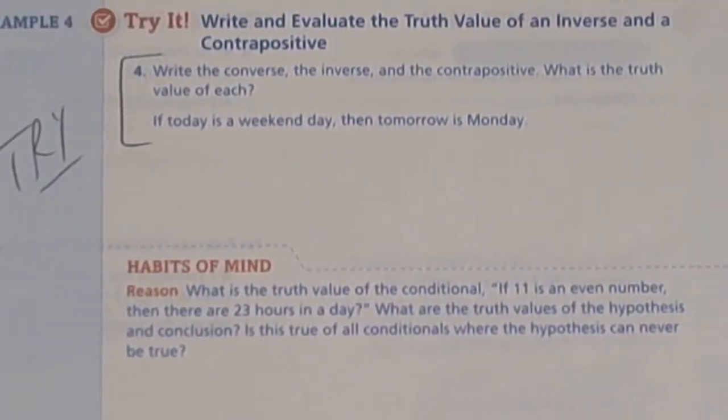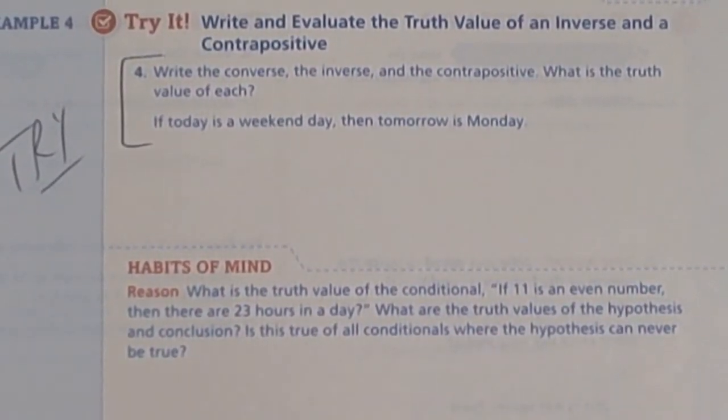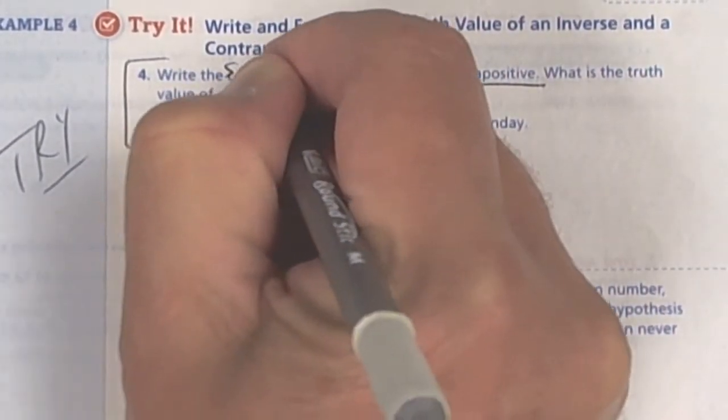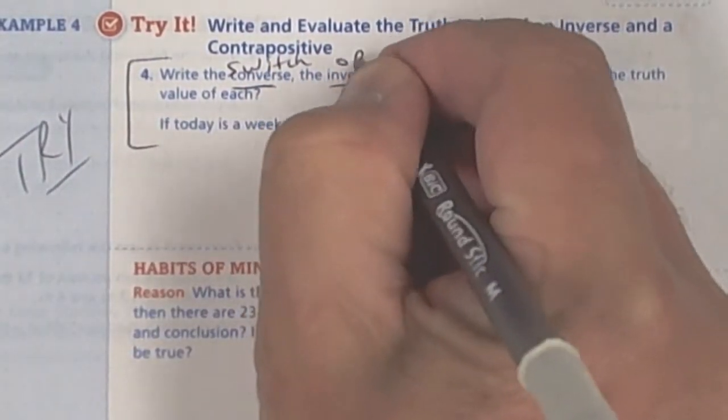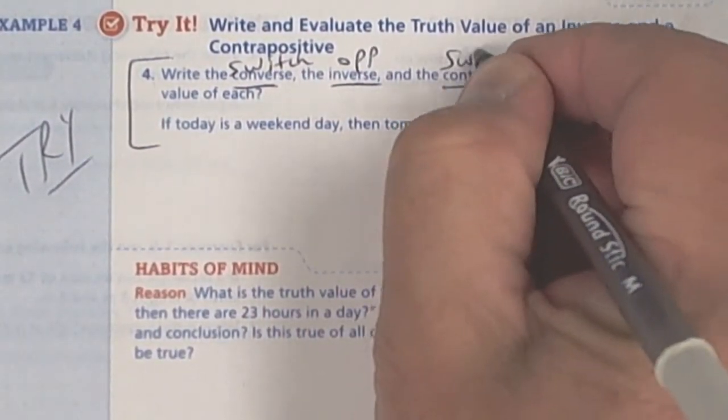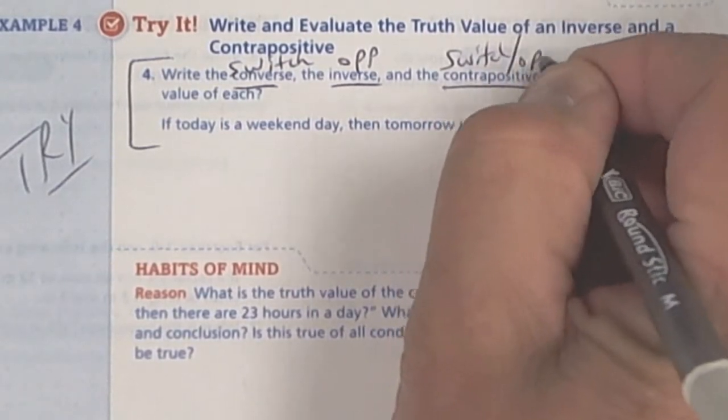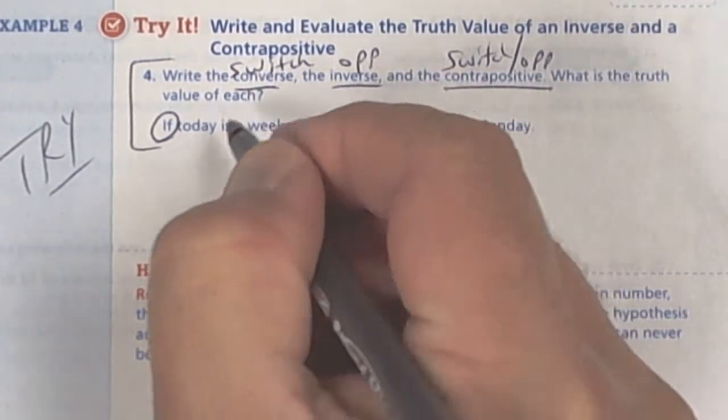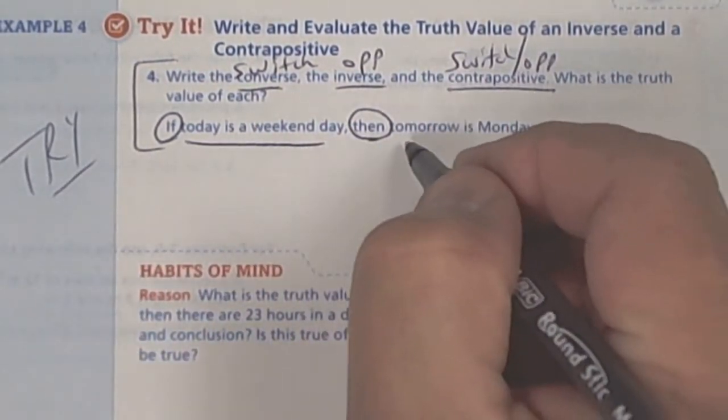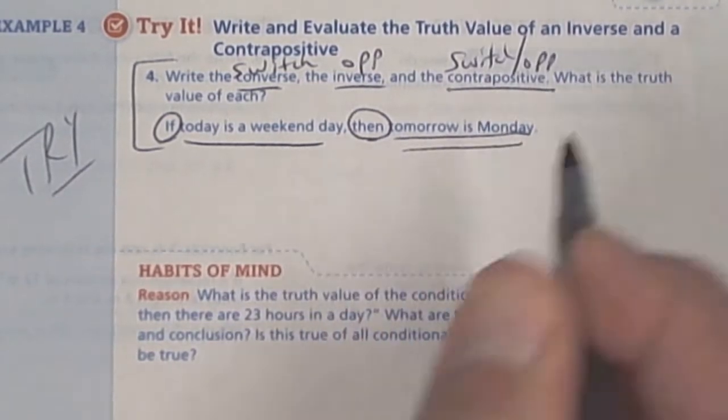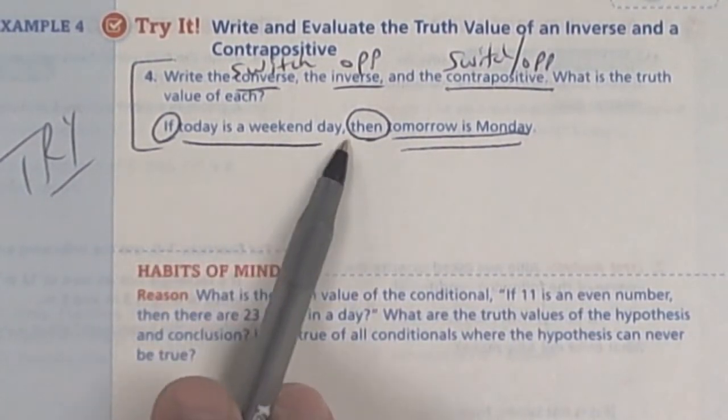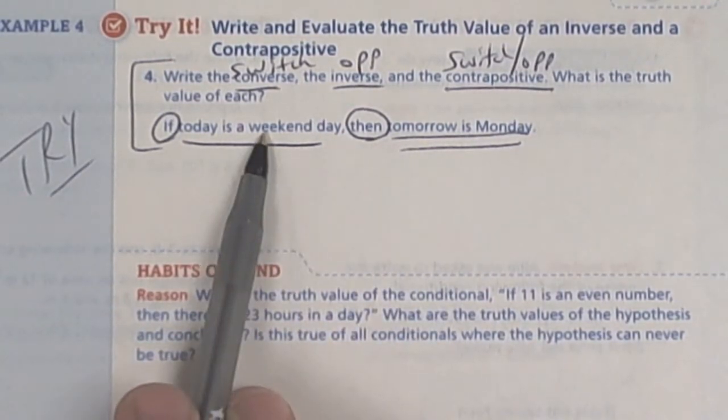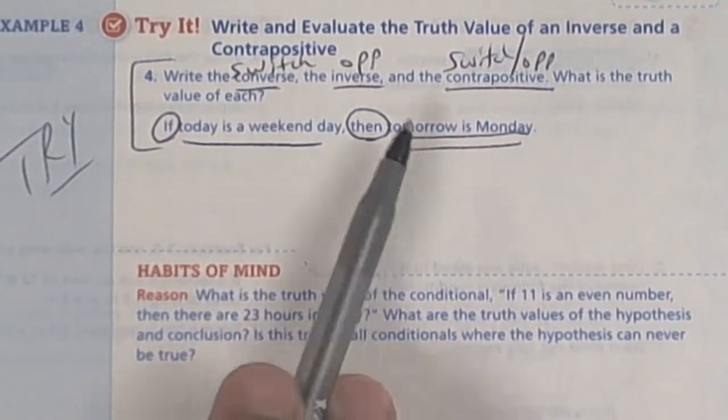Let's try one more and then I'll get you started on your work. It says write the converse, the inverse, and the contrapositive. So converse is switch. Inverse is opposite. And contrapositive is switch and opposite. Write that down. So if, circle that, and then. This is your hypothesis, one line. And this is your conclusion, two lines. So if today is a weekend day, then tomorrow is Monday. Well, what if it's Saturday? Then it's going to be Sunday. So that's sometimes true.